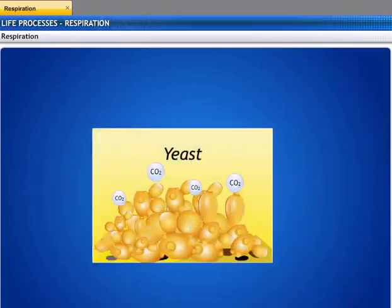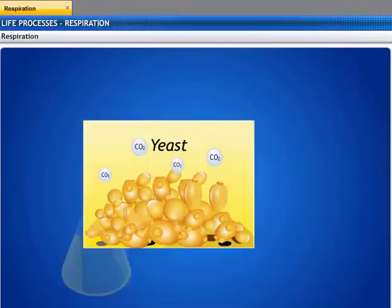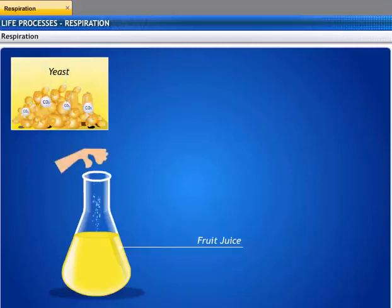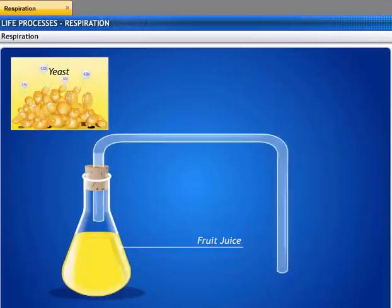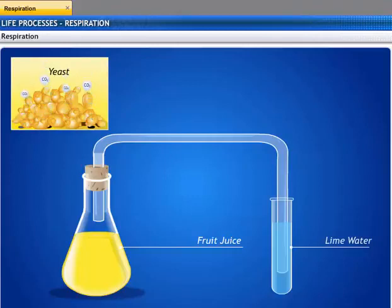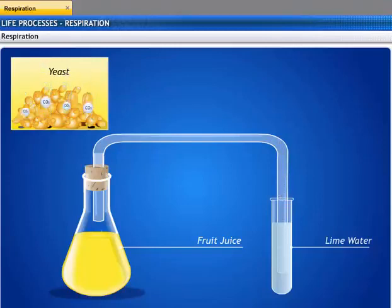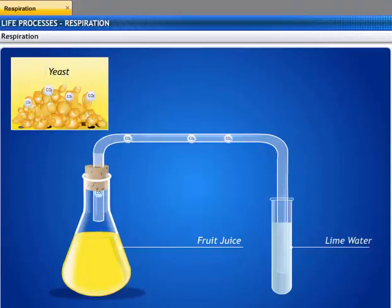Even microorganisms release carbon dioxide. Let's try an activity to demonstrate this. Take some fruit juice in a flask and add some yeast to it. Fit the flask with a one-holed cork and a bent glass tube, dipping the free end into a test tube containing lime water. You will find that the lime water turns milky, showing that microorganisms release carbon dioxide. Yeast acted on the sugar in the fruit juice — this process is called fermentation.